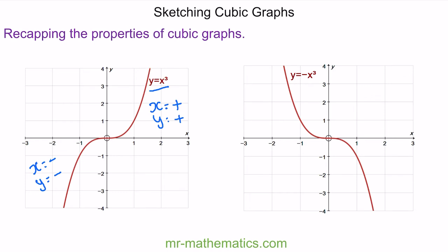Moving on to y is equal to negative x cubed, we can see that when x is negative, y is positive, and on the other half when x is positive, y is negative. This will help us understand the shape of more complicated cubics later on.